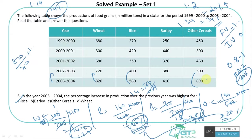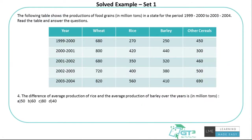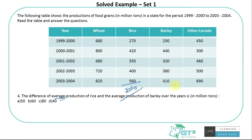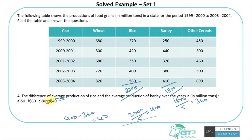Final question: 'What is the difference between the average production of rice and the average production of barley over the five years?' Rice total = 2000, barley total = 1800. Average rice = 2000/5 = 400 million tons. Average barley = 1800/5 = 360 million tons. Difference = 400 − 360 = 40 million tons. The answer is 40 million tons.